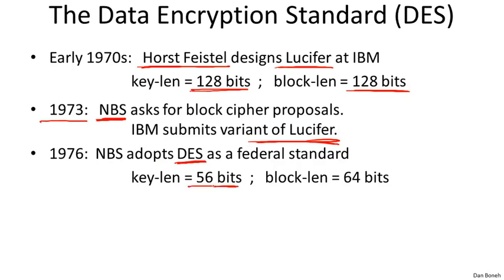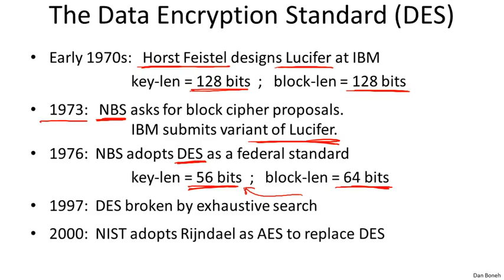For DES, the key length was far reduced from Lucifer — only 56 bits — and the block length was also reduced to 64 bits. The decision to reduce the key length is the Achilles heel of DES and was a source of many complaints. Already in 1997, DES was broken by exhaustive search: a machine searched through all 2^56 possible keys to recover a challenge key. This 1997 experiment essentially spelled the doom of DES.